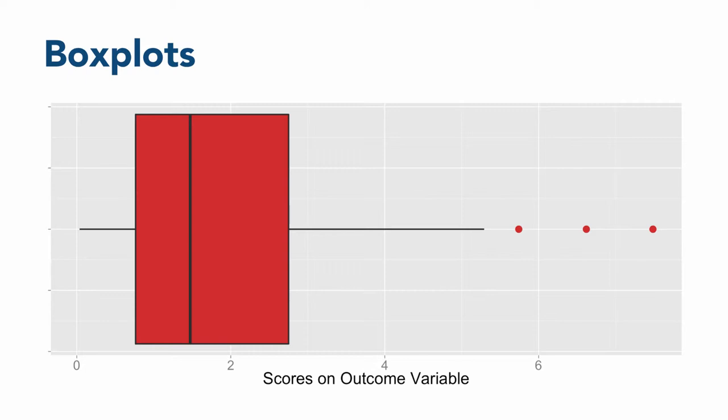Outliers, which are unusually high or low scores, play an important role in data analysis because they can dramatically distort many common statistics. While there are many ways to determine if a score is an outlier, one of the most common and effective ways is based on the size of the box in the middle of a boxplot.